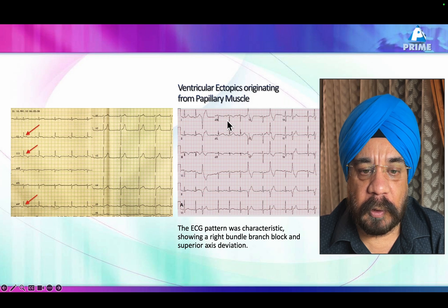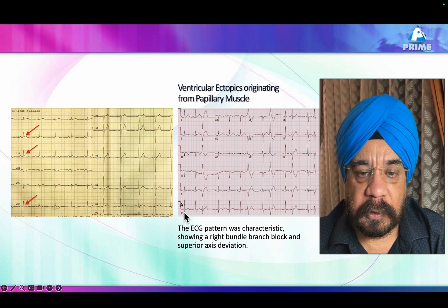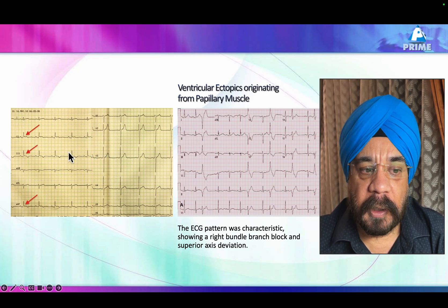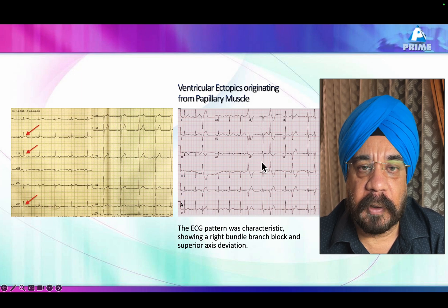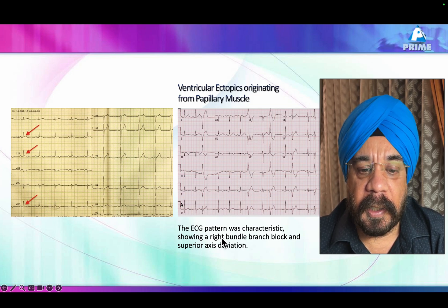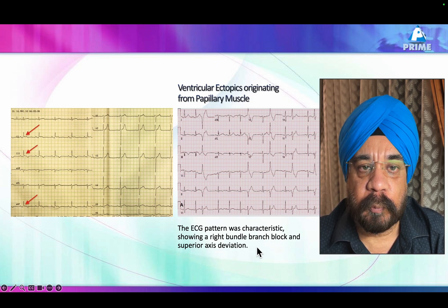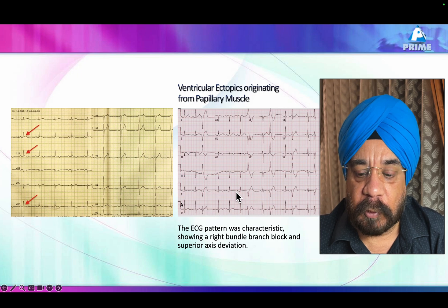This is an arrhythmogenic situation of mitral valve prolapse, and this is the ECG pattern you get in this category of patients. You get very characteristic ventricular ectopics — notice a tall R wave in V1 with a right bundle branch physiology, left superior axis. This indicates that these ectopics are actually originating from the papillary muscle.